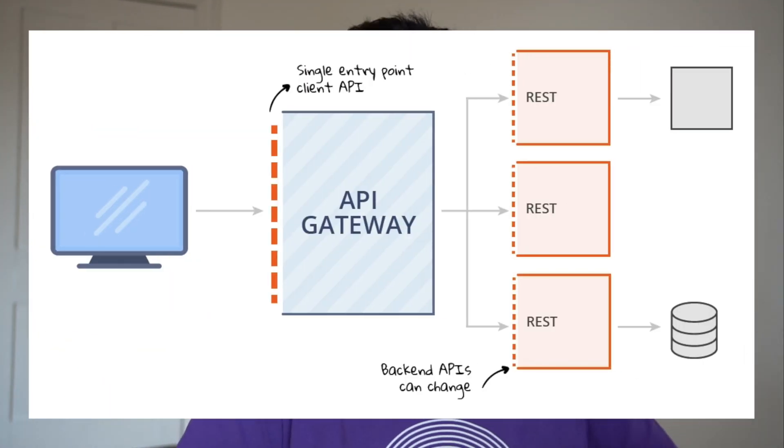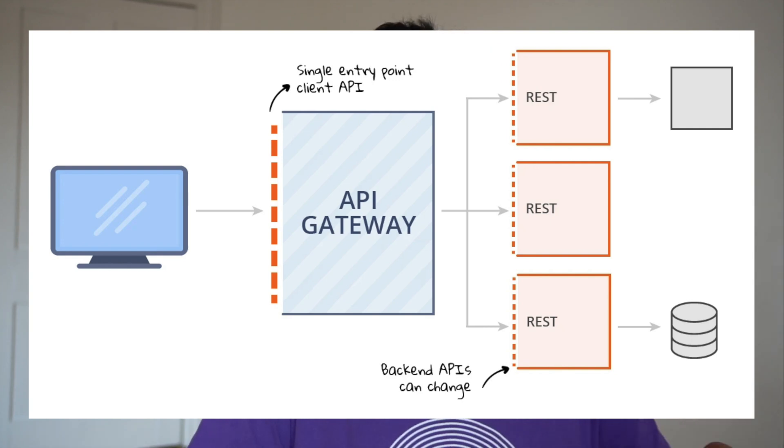When a client sends a request, it goes to the API gateway first. The API gateway then looks at the request and decides where it goes — another way to relate to it is like a traffic cop directing cars at a traffic stop. The gateway can also combine requests if needed; for example, gathering data from multiple sources to create a complete response for the client.